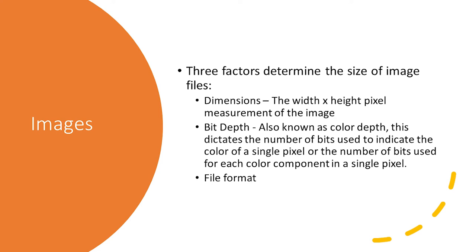When it comes to what sets the size of files, the exact name of the factors can vary. For images, the three factors are pixel dimensions, bit depth, and file format. Dimensions represent the width by height of the image in terms of pixels, bit depth represents the number of bits used to indicate the color of a pixel or the color component in a pixel, and file formats can vary depending on the purpose of the image. In terms of image preservation, the main three formats to keep in mind are TIFF, PNG, and JPEG.